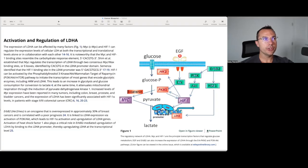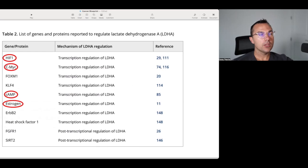ERB2 or HER2-nu is an oncogene that is overexpressed in approximately 30% of breast cancers and is correlated with a poor prognosis. It is linked to LDHA expression via activation of the PI3K-AKT pathway, which leads to HIF-1 activation and upregulation of LDHA genes. We have basically an entire network of how growth factors interact with various signaling cascades, which ultimately upregulate LDHA. MYC and HIF-1 are the principal transcriptional factors that regulate glucose metabolism. EGF and ERBV2 can also increase the expression of LDHA through the ERK, PKM2, and PI3K-AKT pathways.